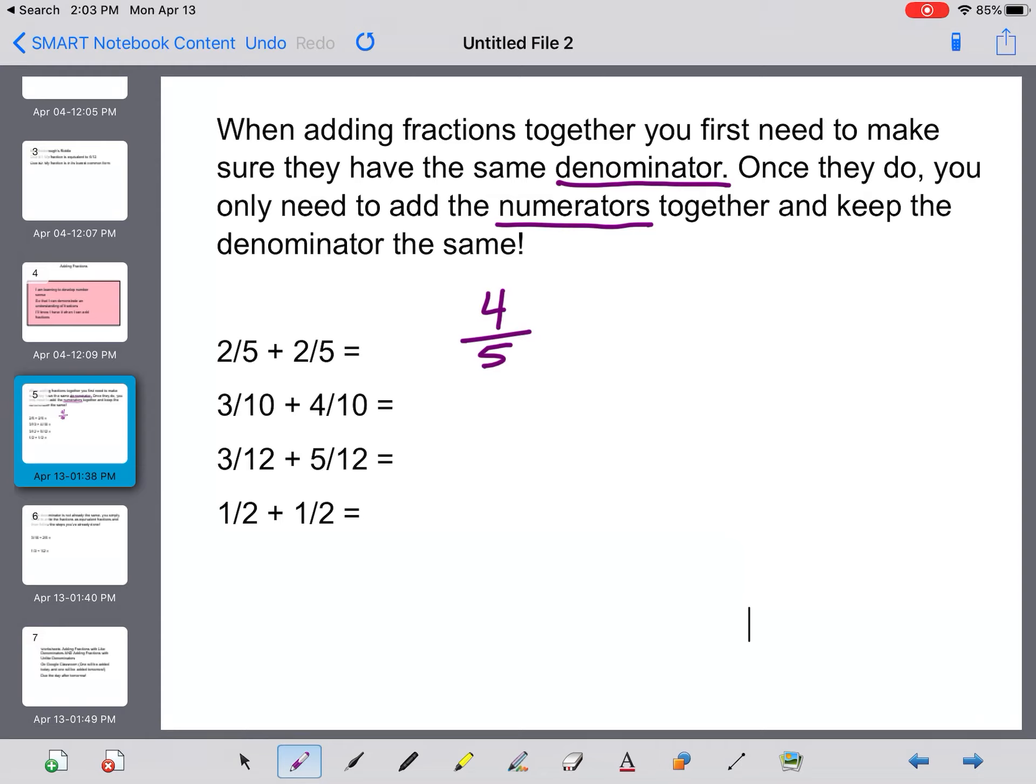Next one is 3 over 10 plus 4 over 10. So I know my denominator will be 10 and my numerator will be 3 plus 4, which is 7.